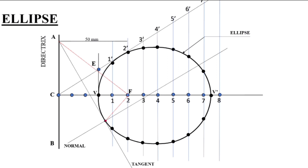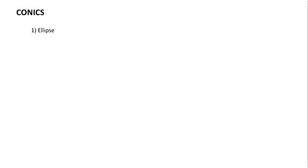Before we start, we will see some basics of conic curves. Apart from ellipse, there are two other curves: one is parabola and the second is hyperbola. These three types of curves are called conics, and today we are going to see how to draw an ellipse by the directrix focus method.